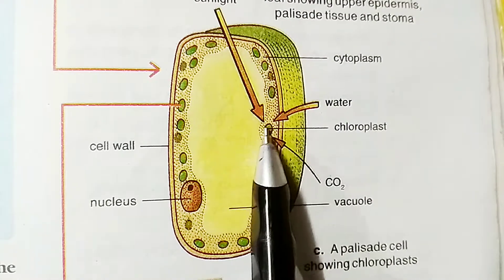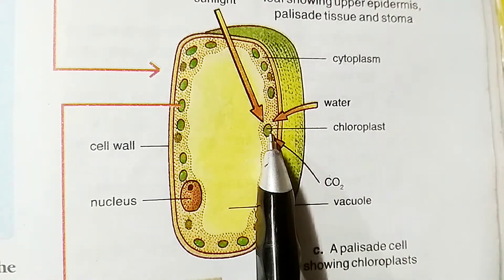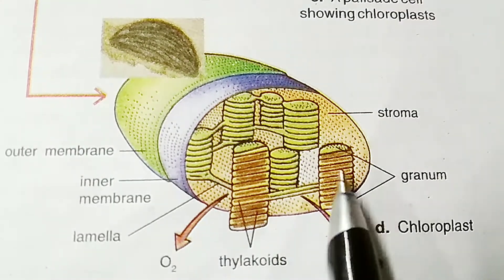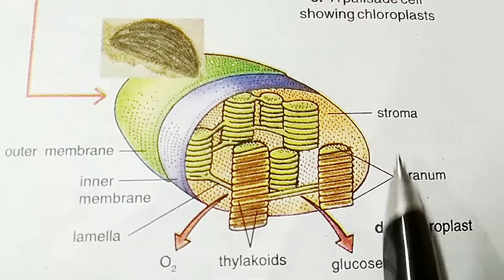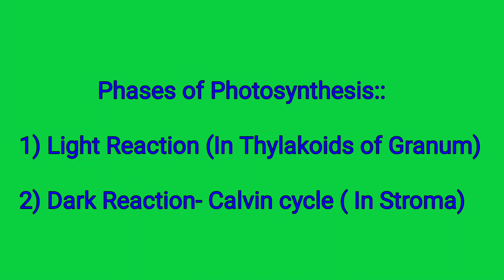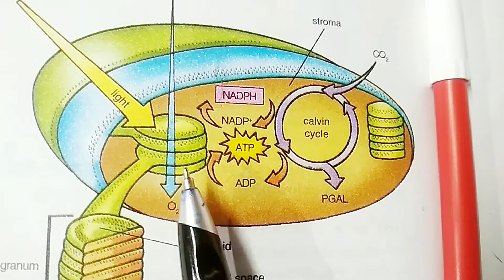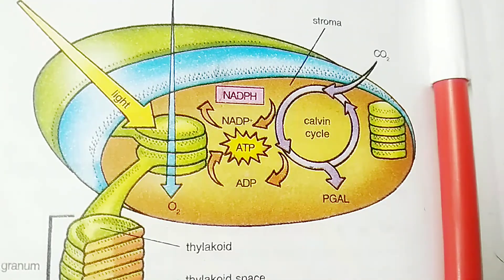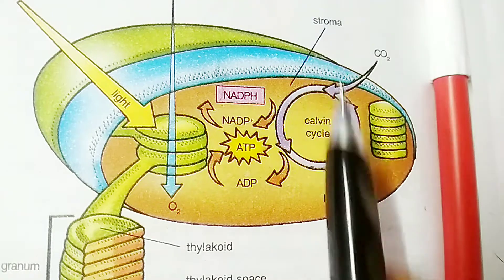If we see the inner part of a chloroplast, inside the chloroplast there are two major components: one is called granum and the other is called stroma. Each layer of granum is called thylakoids. In case of photosynthesis, there are two phases: the first part is called the light reaction and the second part is called the Calvin cycle or dark reaction. The light reaction takes place in the thylakoids of the granum, and the dark reaction takes place in the stroma of the chloroplast.